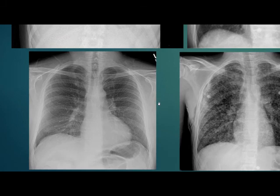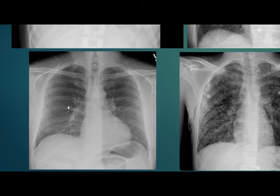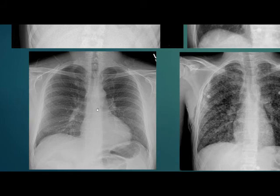In this next image, there are subtle nodules visible, along with fine reticulation. There is also slight sparing of the costophrenic angles and apices. This is a case of hypersensitivity pneumonitis.